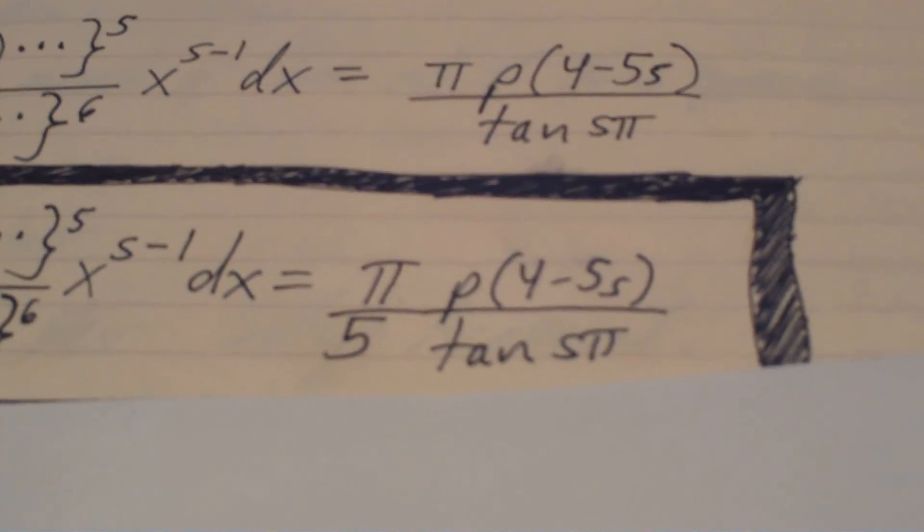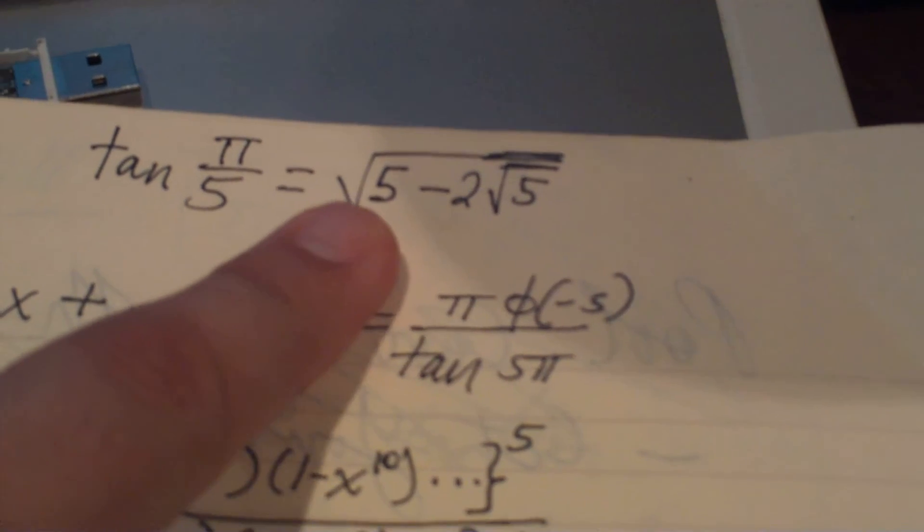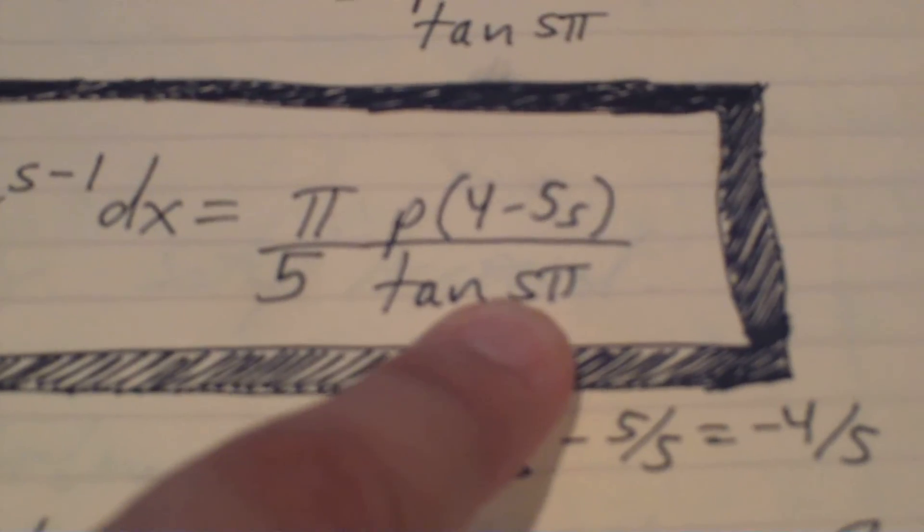Now we're going to substitute in a clever value of s to get a nice value for our integral — for our massive quotient. We're going to take the value of s to get tangent of s pi equal to tangent of pi over five, which gives a nice nested radical: the square root of five minus two times the square root of five, underneath the radical. So we're going to let s equal one-fifth, and by letting s equal one-fifth we get tangent of pi over five and can use our identity.